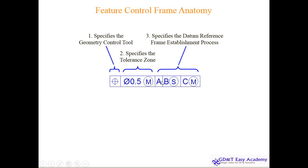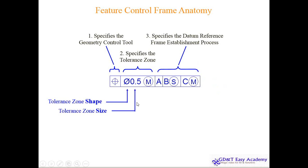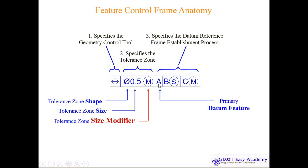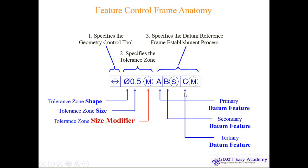The datum reference here uses MMB — maximum material boundary, not MMC. This determines the tolerance zone shape. A cylindrical tolerance zone is derived here; if you have a square feature, you can have a square tolerance zone. The tolerance zone size is 0.5, and the tolerance size modifier is MMC. The primary datum restricts 3 degrees of freedom, the secondary datum restricts 2 degrees, and the tertiary again restricts 3 degrees.